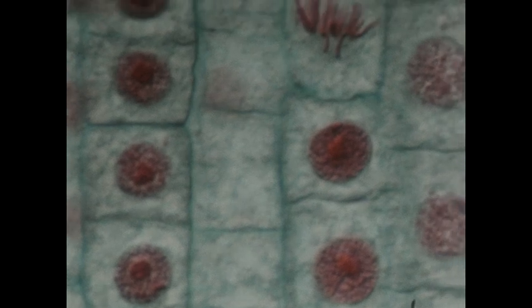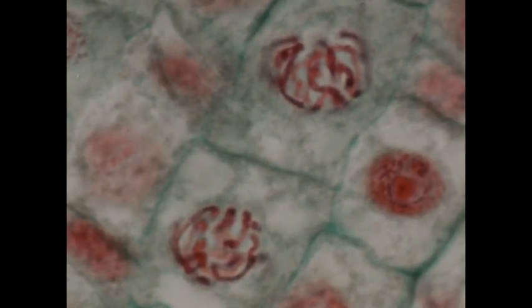When a cell is getting ready to divide, its DNA coils up and forms structures first seen in cells that had been stained, chromosomes. Duplicate sets of chromosomes are parceled out, giving each cell a complete set of genetic instructions.